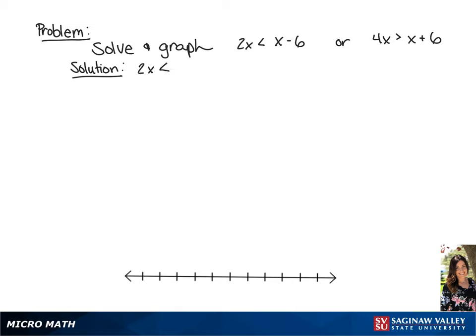We have 2x is less than x minus 6 or 4x is greater than x plus 6. We're going to start with working on the first inequality by subtracting x from each side. This will give us x is less than negative 6.